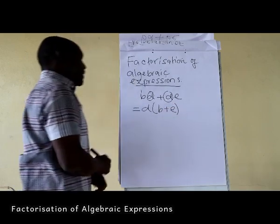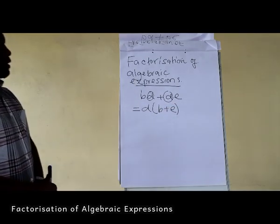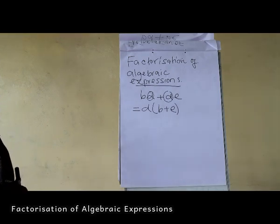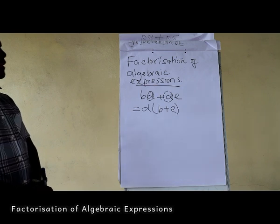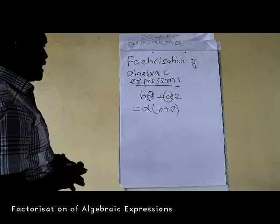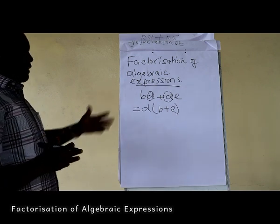By writing bD + dE as D times (b + e), we are factorizing bD + dE. And in that form, bD + dE has factors which are D and (b + e) in brackets.